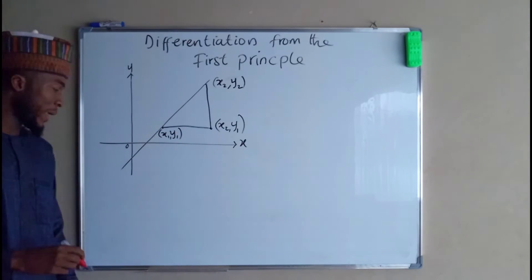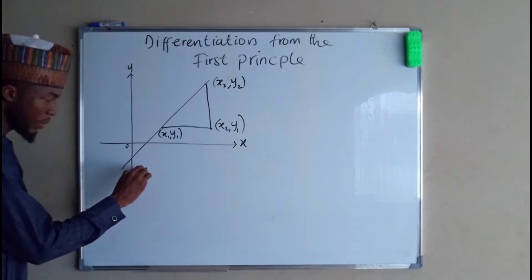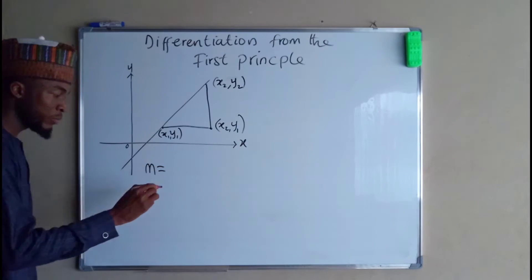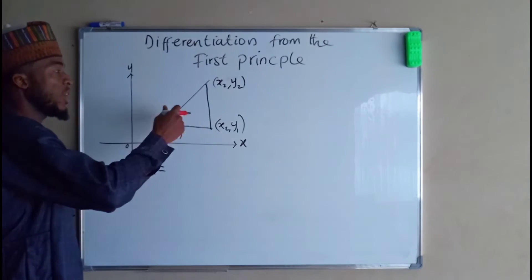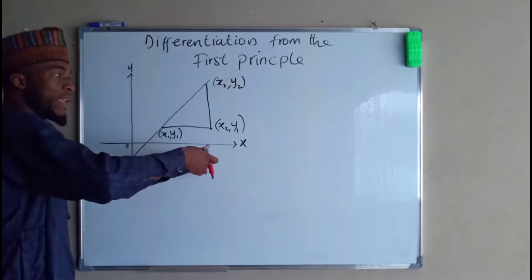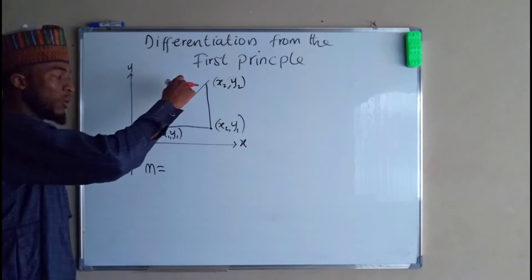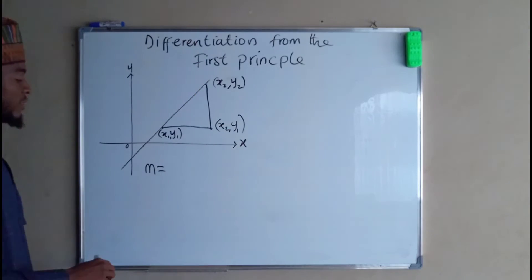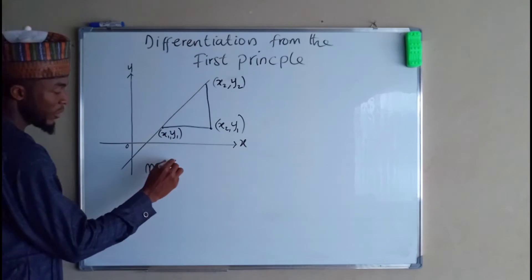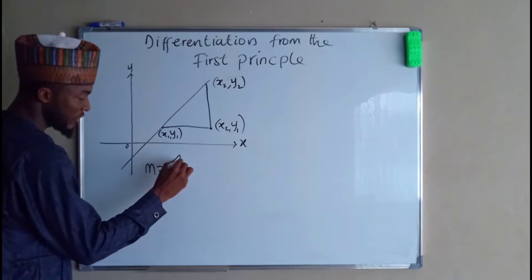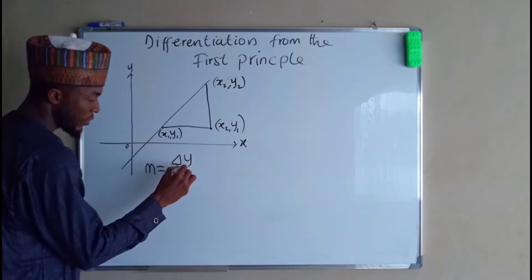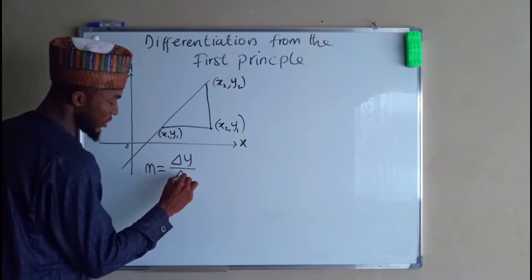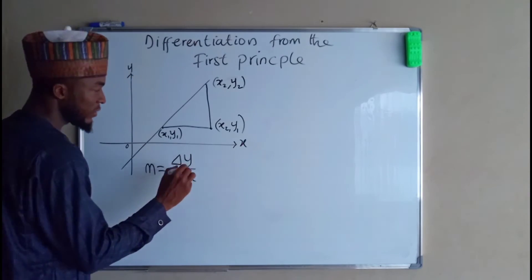So the slope, M, is nothing but the change along the y axis divided by the change along the x axis. So we have change in y divided by the change in x.